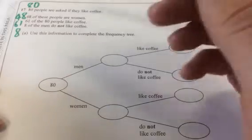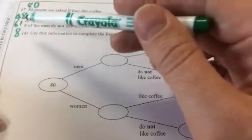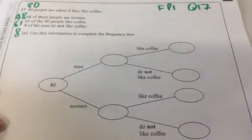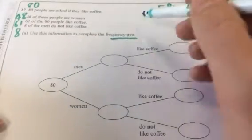80 people are asked if they like coffee. 48 of these people are women. 61 of the 80 like coffee, and 8 of the men do not like coffee. So we've got to complete this frequency tree.